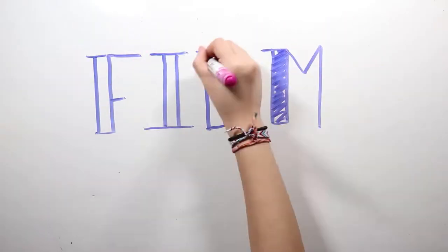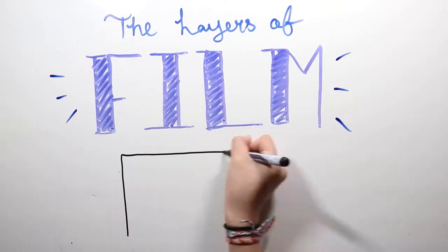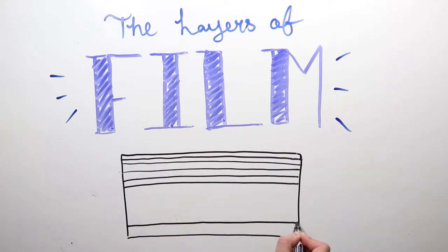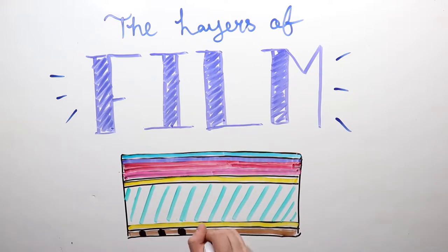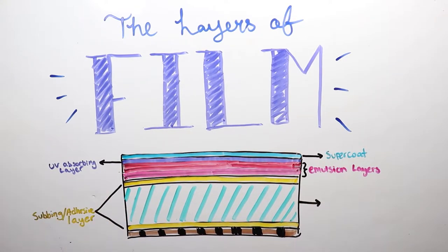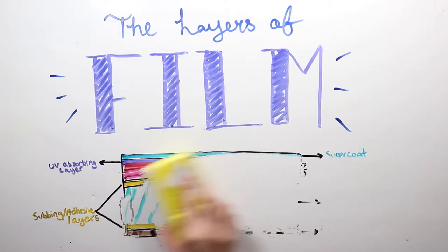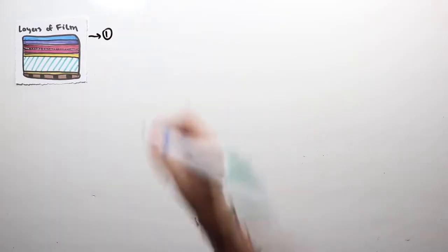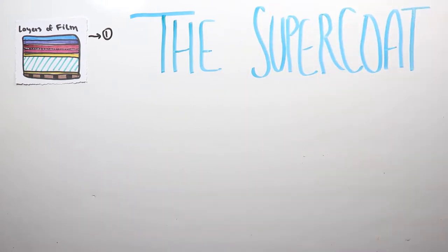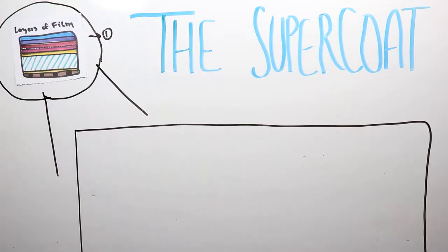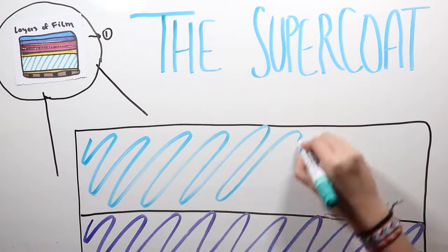So let's start by understanding what film is actually made out of. Even though to the naked eye film may look thin, it's actually made up of multiple layers, and it's the combination of these layers that give each image its character. Film consists of a transparent and scratch-resistant layer called the supercoat. This is the first layer of film, and this protects the film and gives it that glossy texture.